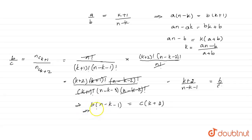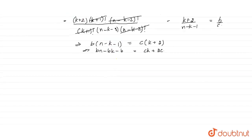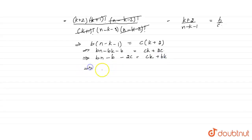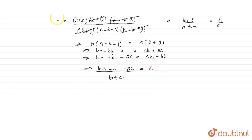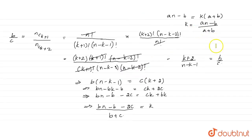Multiplying inside the brackets, we get bn - bk - b = ck + 2c. Simplifying, bn - b - 2c = ck + bk. Taking k common on the right side, we get k(b + c). So k = (bn - b - 2c)/(b + c). Now we have two values for k: k = (an - b)/(a + b) and k = (bn - b - 2c)/(b + c).